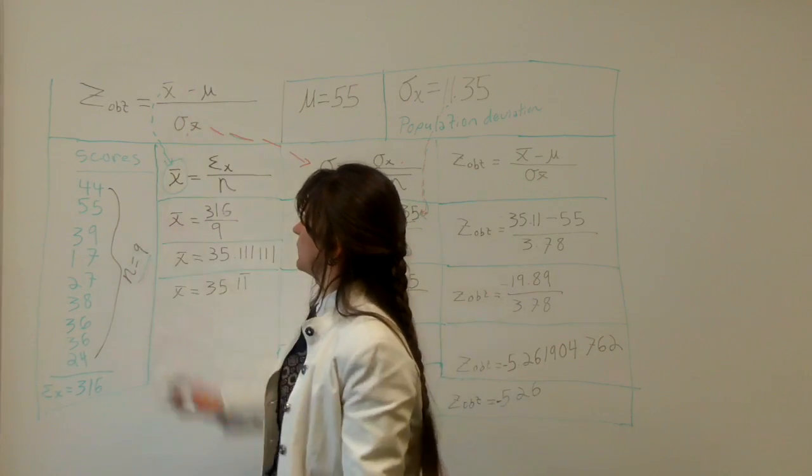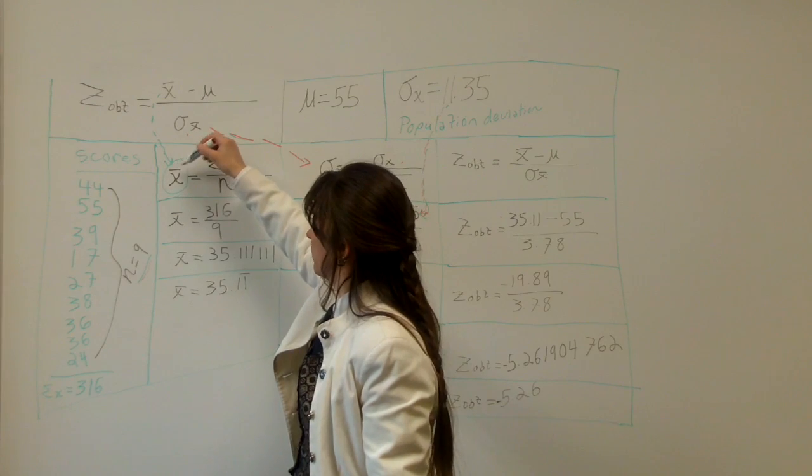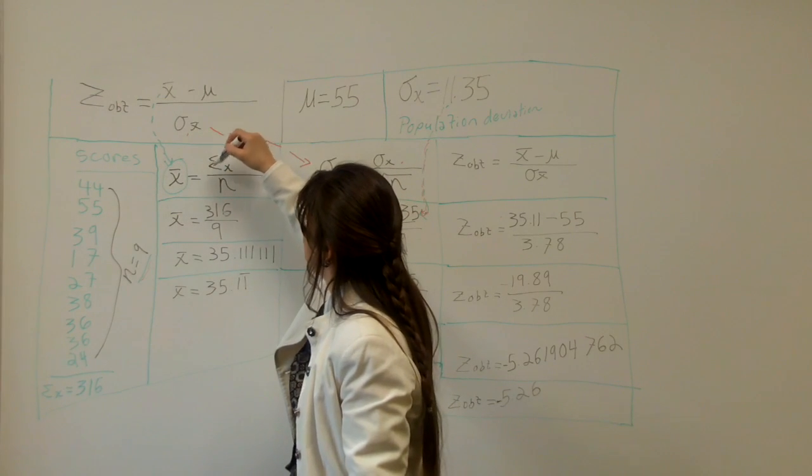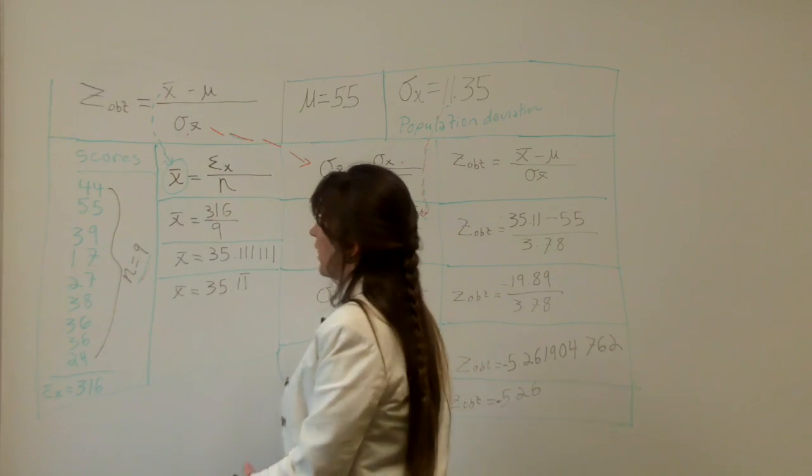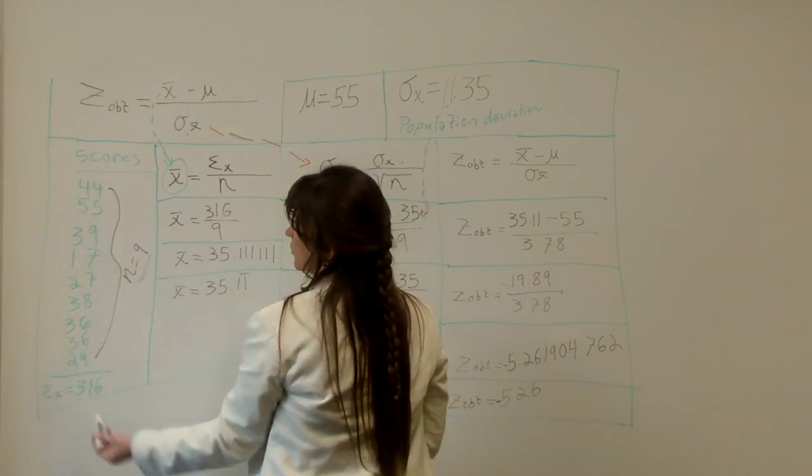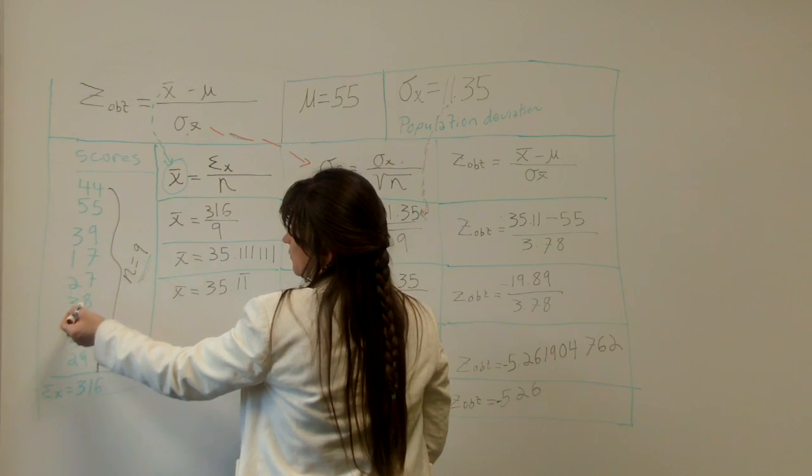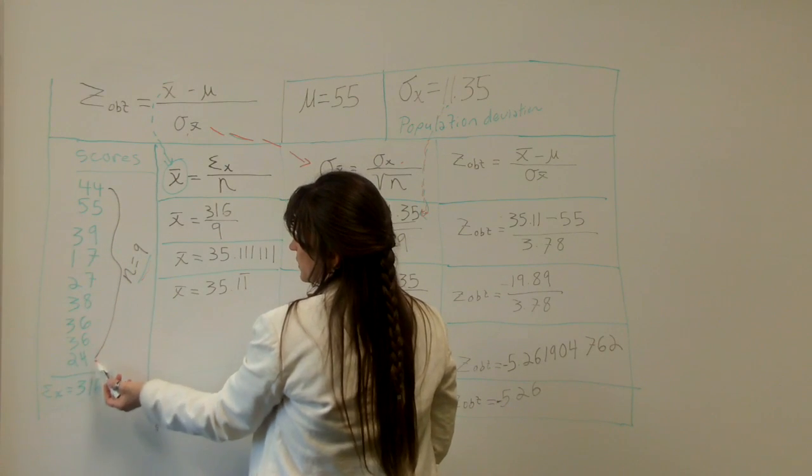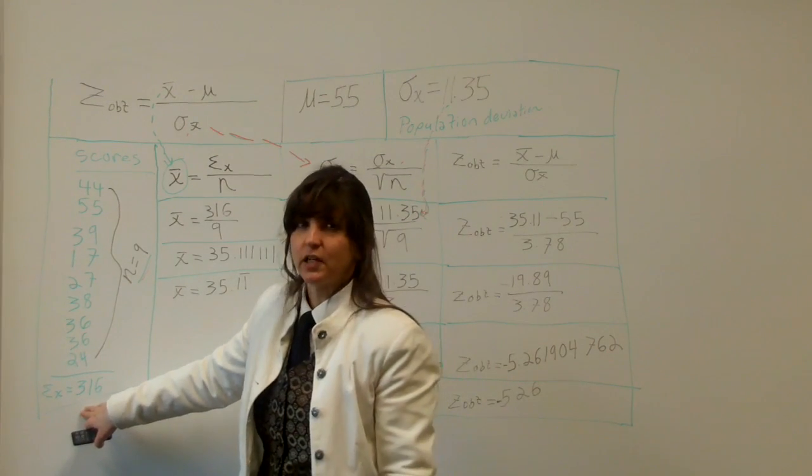First we have to figure out the sample mean. Remember for that the formula is bar X or mean equals summation X, the sum of X, divided by N. The sum of X is you're adding all the scores together: 44 plus 55 plus 39 plus 17 plus 27 plus 38 plus 36 plus 36 plus 24 equals 316.